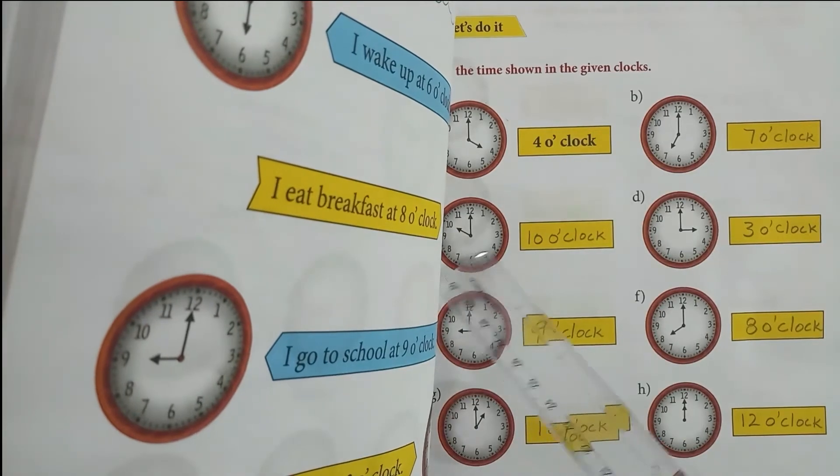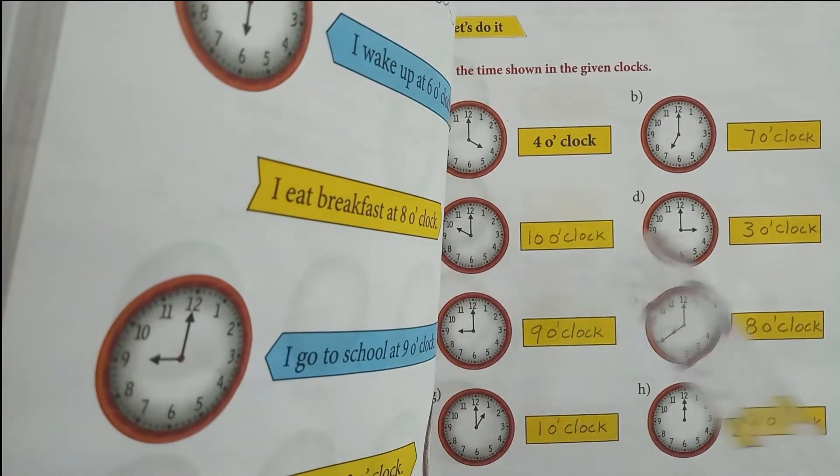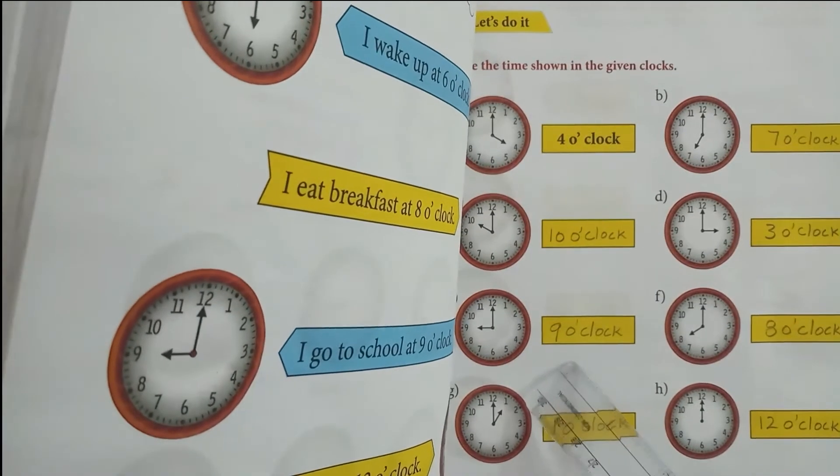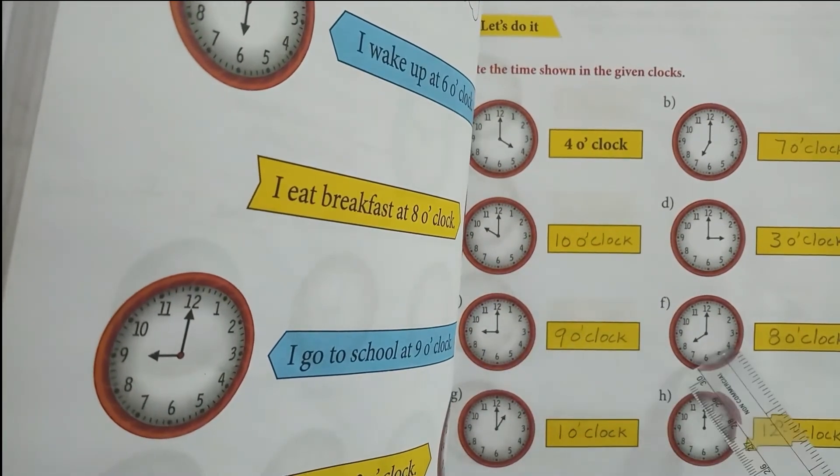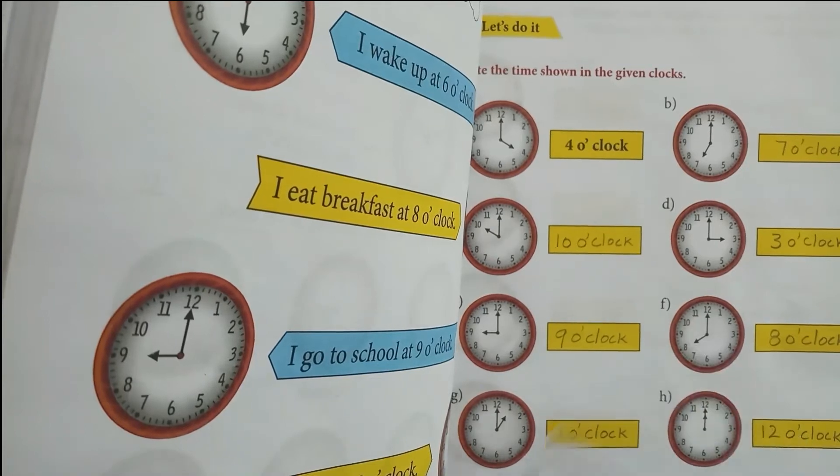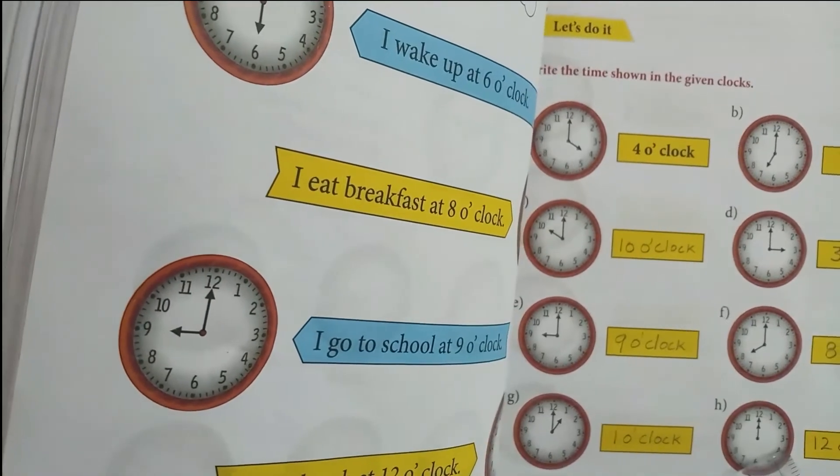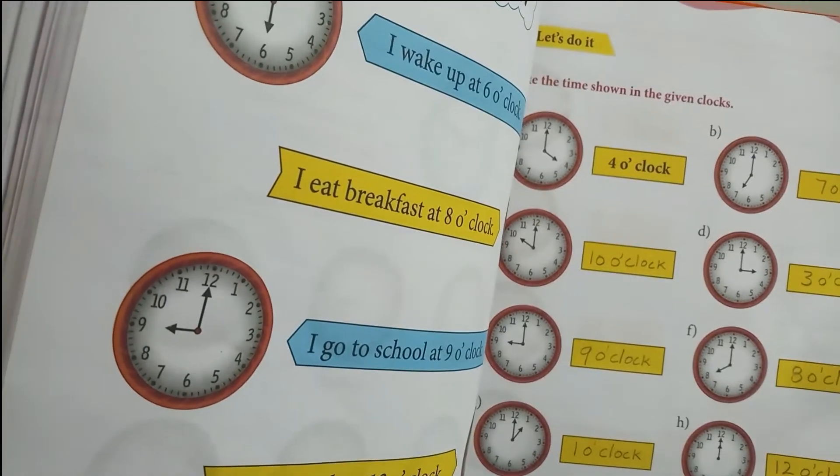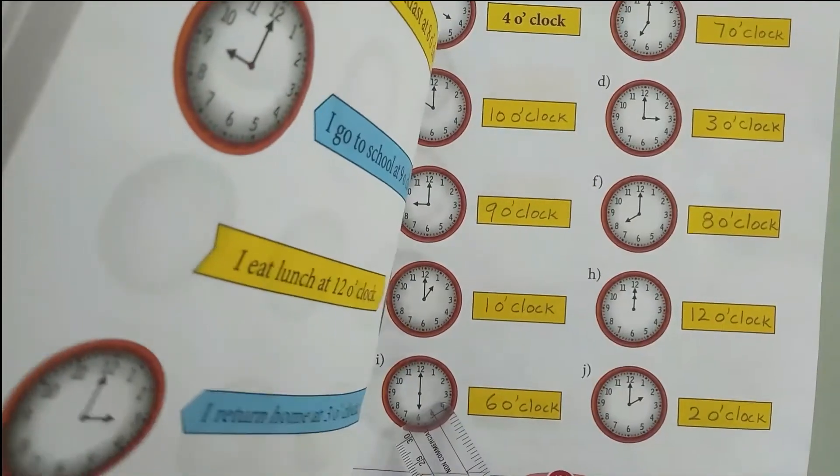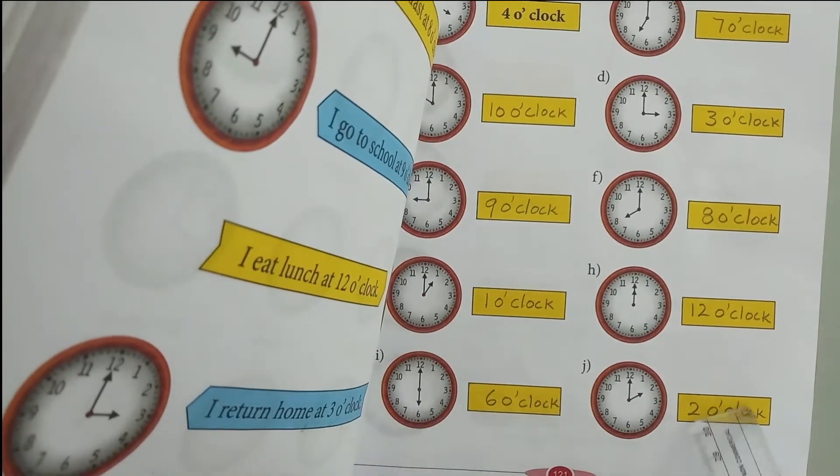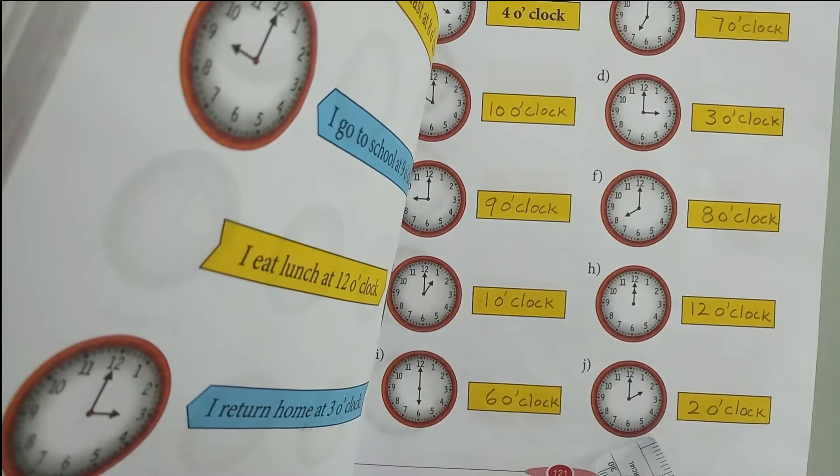Now C: 10 o'clock. D: 3 o'clock. E: 9 o'clock. F: 8 o'clock. G: 1 o'clock. H: 12 o'clock. I: 6 o'clock. J: 2 o'clock.